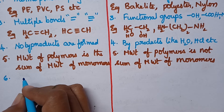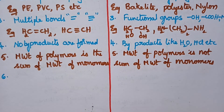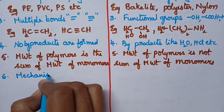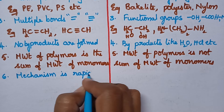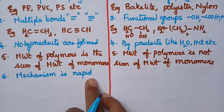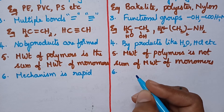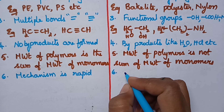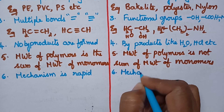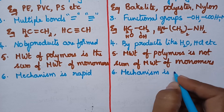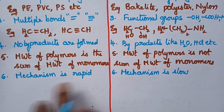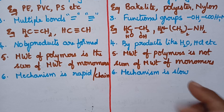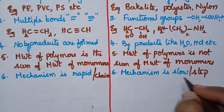When we observe the mechanism, addition polymerization involves a chain mechanism and hence it takes place rapidly. Condensation polymerization involves a step mechanism — monomers are added in a stepwise manner and hence the mechanism is slow.